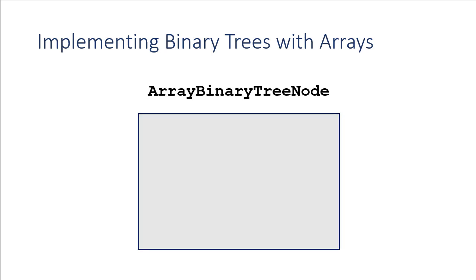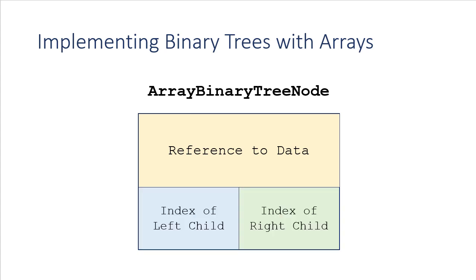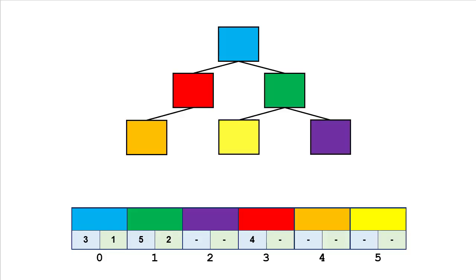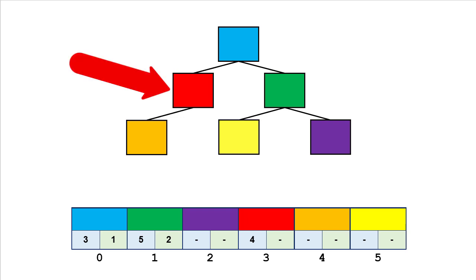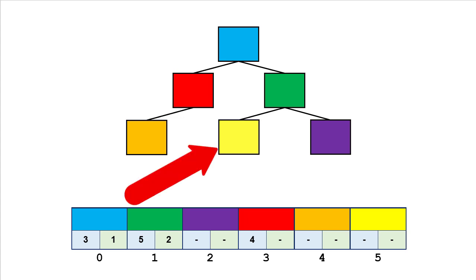We have this array binary tree node object. It holds a reference to some data and two indices for the right child and the left child. The tree looks like this: the blue root has two children — the left child is the red node stored at index three, and the right child is the green node stored at index one. The green node has a right child, the yellow node, stored at index five.